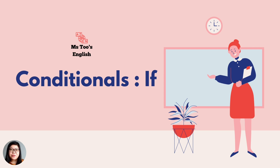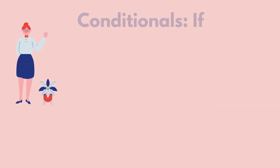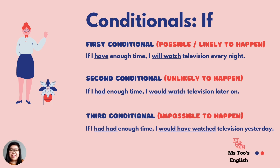Basically, there are a few conditionals. In this video, we are going to focus on three conditionals. And they are first conditional, second conditional, and third conditional. As you can see, there is a simple sentence for each conditional. For all these three conditionals, their usage are different and their grammar in terms of tenses are different as well.